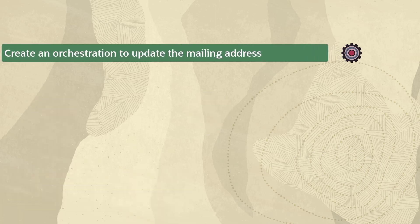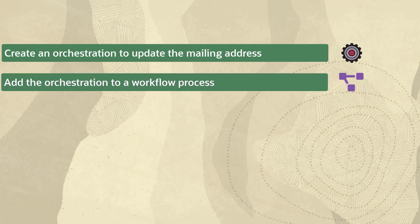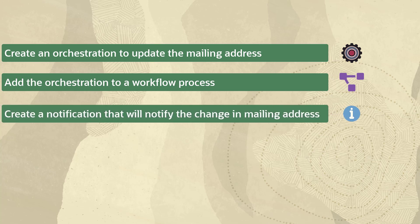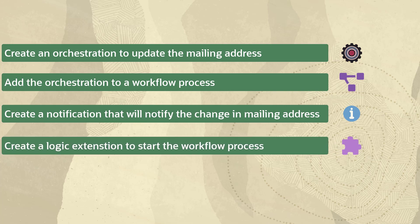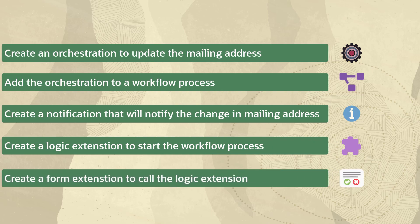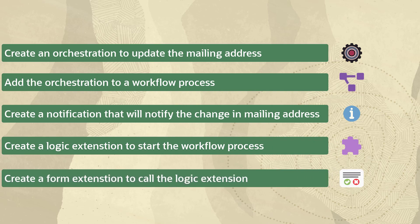Your goal for this tutorial is to create a simple orchestration that will update the supplier's mailing address and add an orchestration in a new workflow process. You will also create a notification that will inform the user about the update in the supplier's address. Finally, you will create a logic extension that initiates the workflow process and a form extension to call the logic extension.